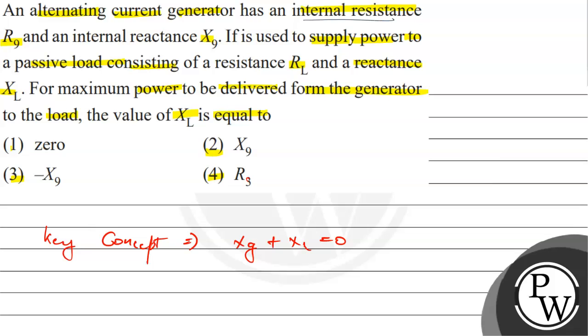Here we have an internal resistance Rg and Xg, which is the generator internal resistance, and Rl and Xl, which is the load resistance.